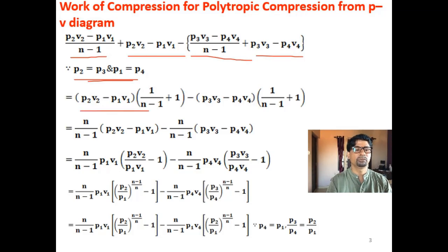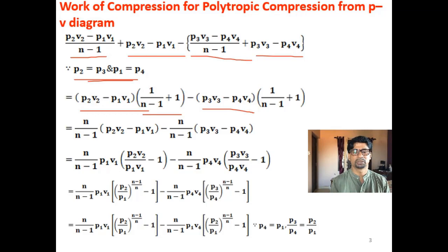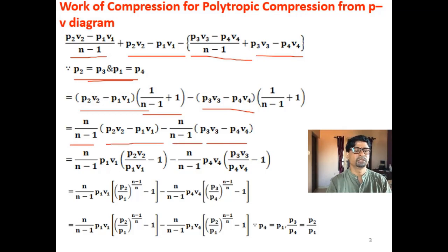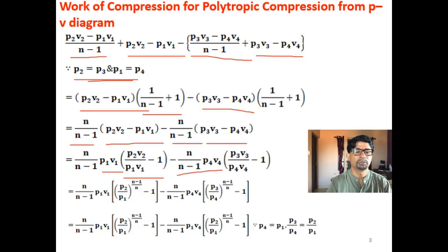From the first two terms, take P2V2 minus P1V1 common outside — inside the bracket you get (1/(N−1) + 1). In the second term, P3V3 minus P4V4 is taken outside with the same bracket expression. Students are encouraged to work out this simplification. After simplification, this becomes N/(N−1) times (P2V2 minus P1V1) minus N/(N−1) times (P3V3 minus P4V4). Taking P1V1 outside the first term gives P2/P1 times V2/V1 minus 1; taking P4V4 outside the second gives P3/P4 times V3/V4 minus 1.